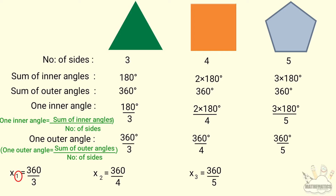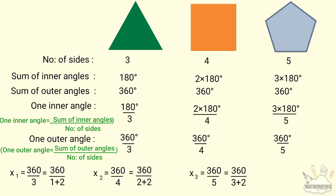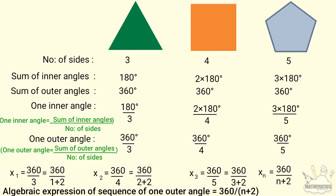The numerator is always 360. The denominator for position 1 is 3 = 1+2, for position 2 is 4 = 2+2, and for position 3 is 5 = 3+2. So xn = 360/(n+2). The algebraic expression for one outer angle is 360/(n+2).